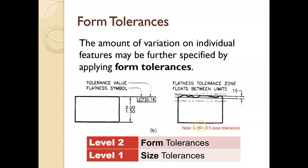Notice that 0.16 is less than 0.5 — the size tolerance is 0.5, and the flatness tolerance needs to be less than that. Otherwise, there's no point in having the flatness tolerance. So 0.16 is less than 0.5.